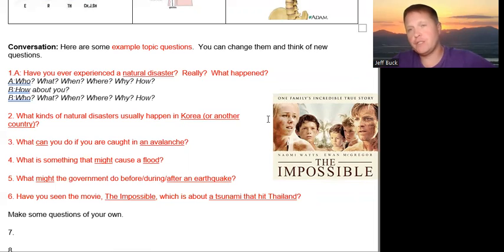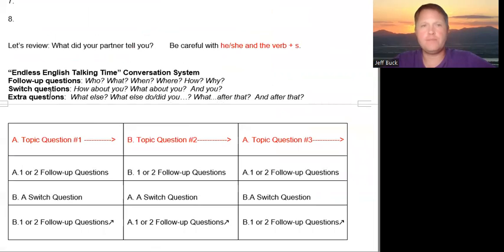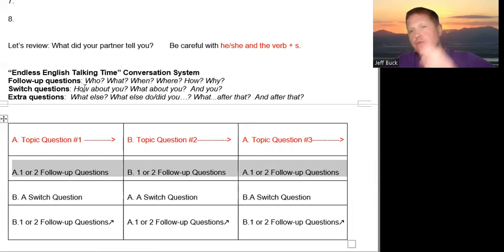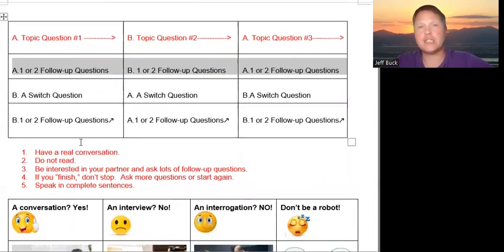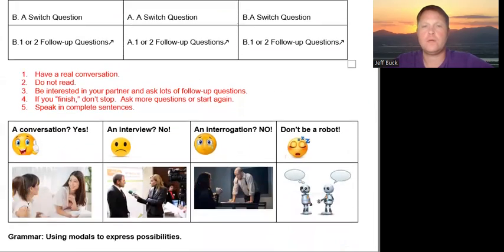So practice these conversation questions alone or with a partner. Think of some other questions. Create some new questions. And of course, practice using the system: topic, question, follow-up question, switch question, follow-up question or follow-up questions. Who, what, when, where, how, and why? Take the time to ask follow-up questions. It's really important that you do so. Who, what, when, where, how, and why? Don't rush through the conversation. Have a relaxed conversation like you would with a friend.